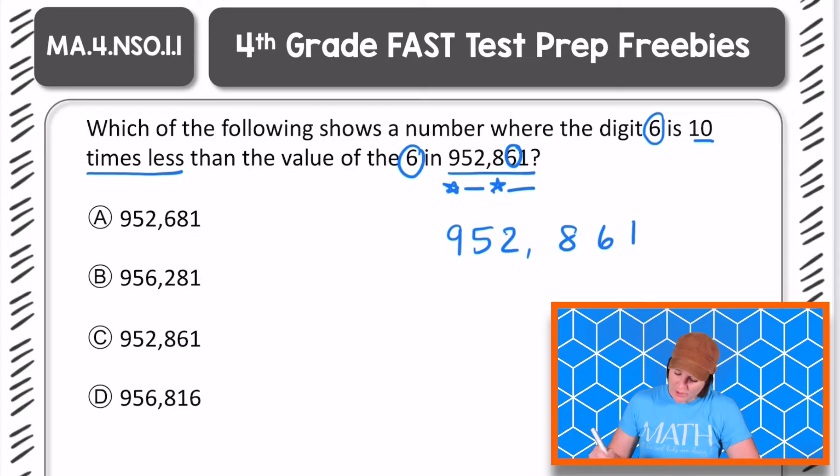So which one, A, B, C, or D, shows a number where the 6 is 10 times less than the number I have here? So if we know our 6 is right here, this is the original number, we are trying to find which answer choice has a 6 that is 10 times less.